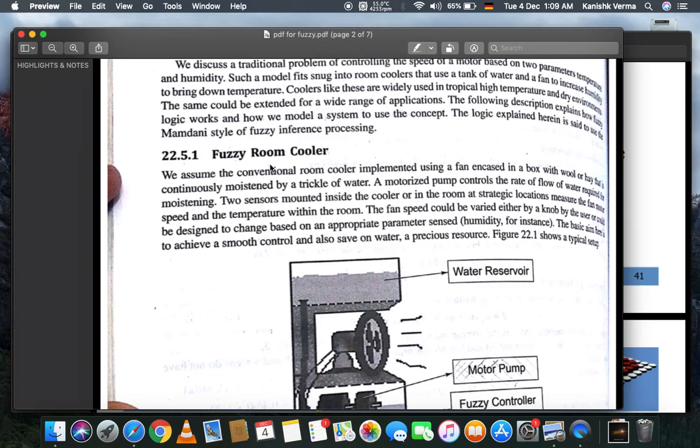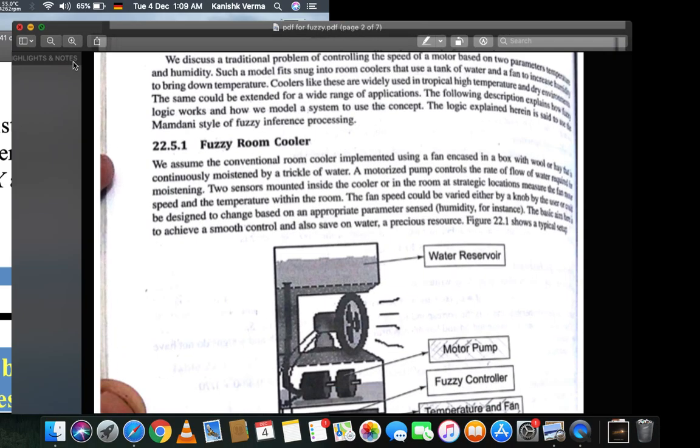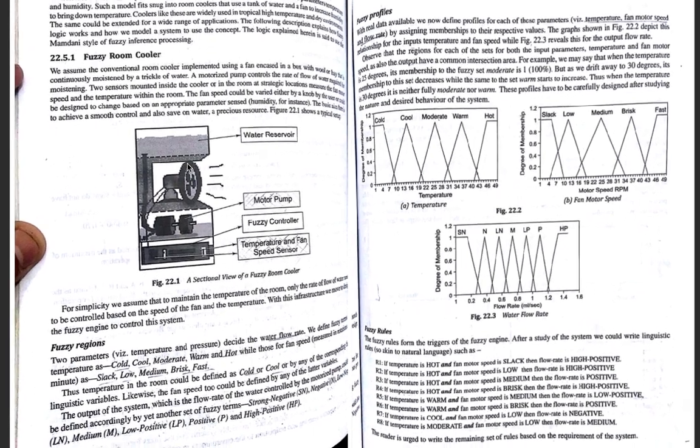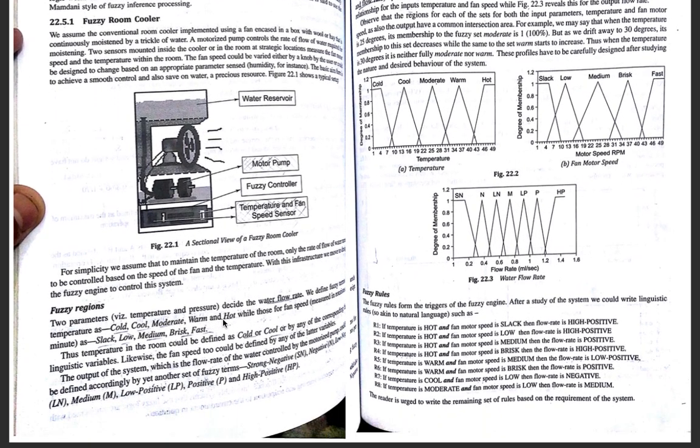Let's see what's the example. We'll be seeing a fuzzy room cooler. First, let's see what are the inputs. We have two input parameters. That is, temperature. Temperature is the first parameter. And based on the temperature and the other parameter, we are trying to assign speed to the fan. What would be the speed of the fan?